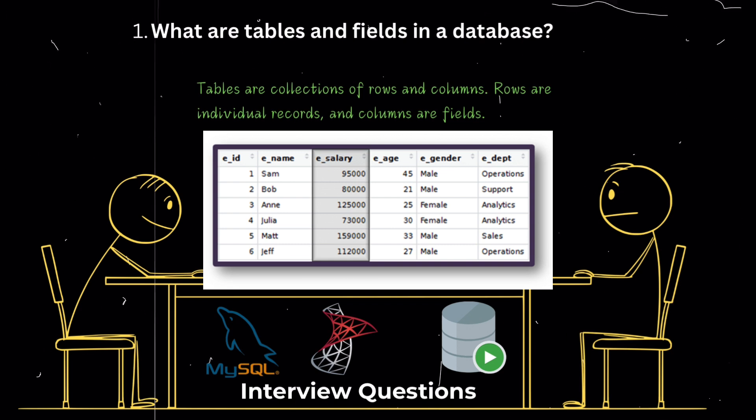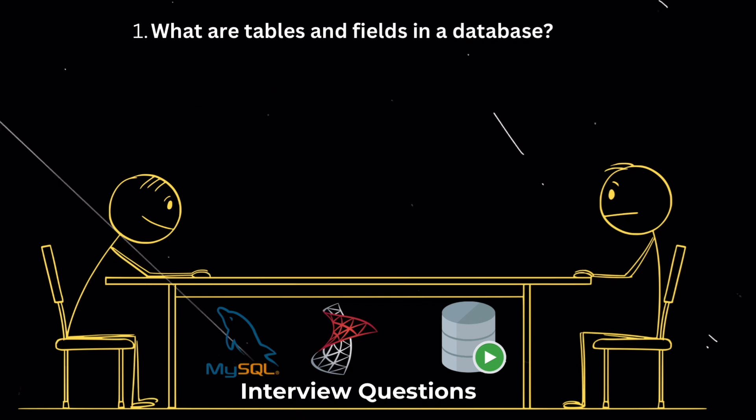What are tables and fields in a database? In a database, a table is a collection of rows and columns. Rows are individual records and columns are fields. For example, in an MS SQL server, tables are designated within the database and schema names. Each row in the table represents a record, and each column represents a field of that record.